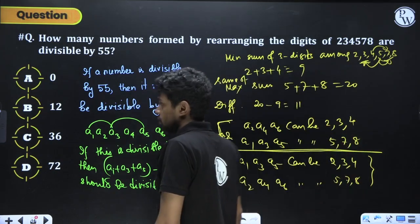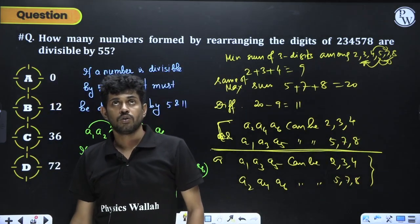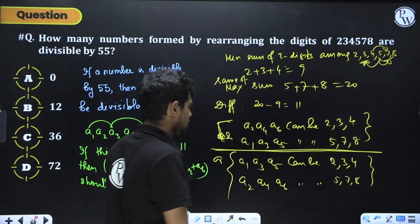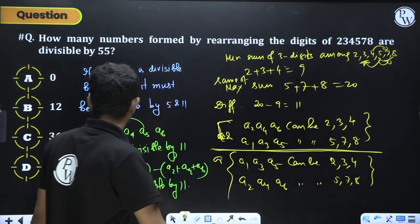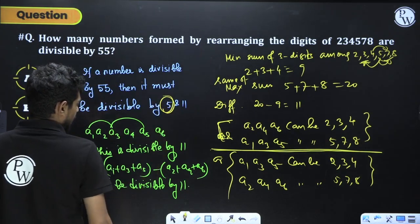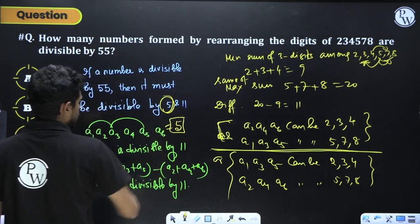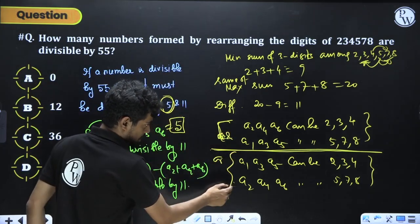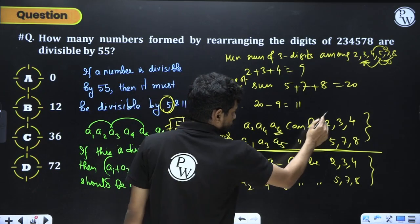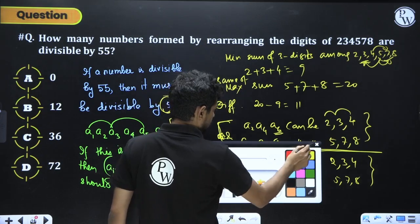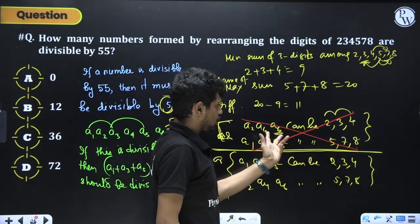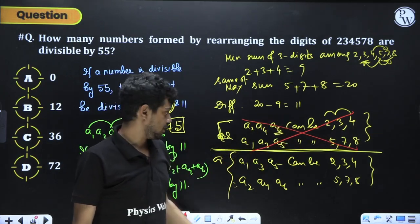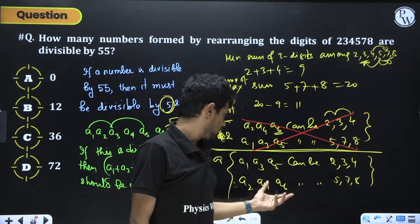For divisibility by 5, the last digit A6 must be 5. This means A6 = 5, so the even-position group must contain 5 — that is, {5,7,8} must be in even positions. So A6 = 5 (fixed), A2 and A4 come from {7,8} (2 arrangements), and odd positions A1, A3, A5 come from {2,3,4} (3! = 6 arrangements).